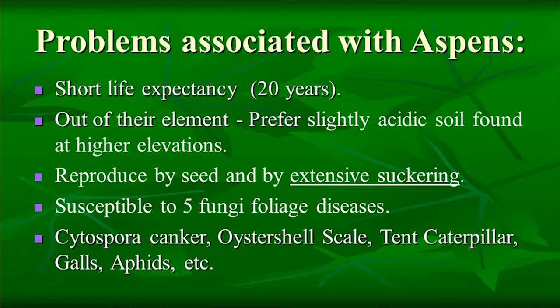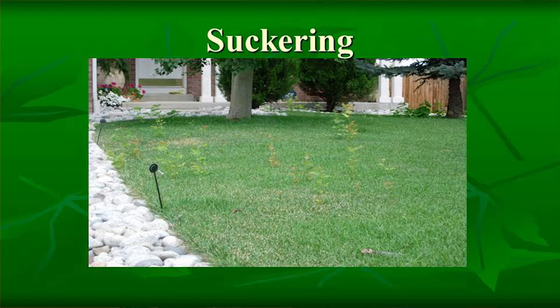Aspens are really out of their element here. They prefer slightly acidic soil, and down here we have highly alkaline soil. They reproduce by seed and by extensive suckering, and they're susceptible to a myriad of fungal foliar diseases, not to mention cytospora, oyster shell scale, tent caterpillars, galls, and aphids.